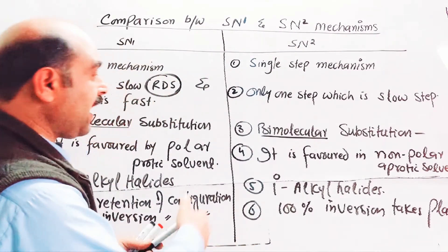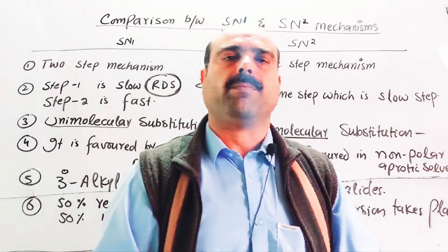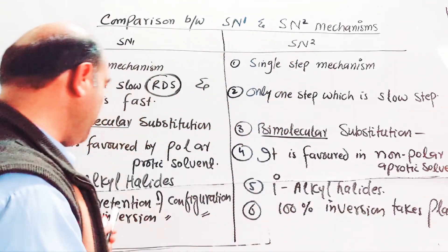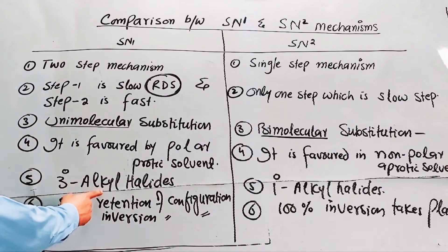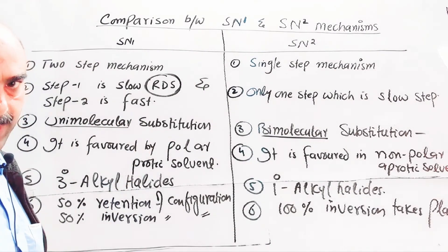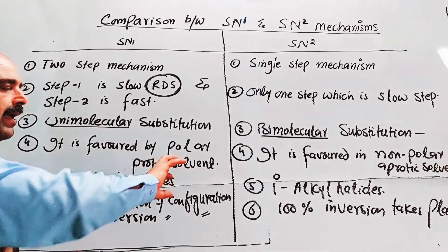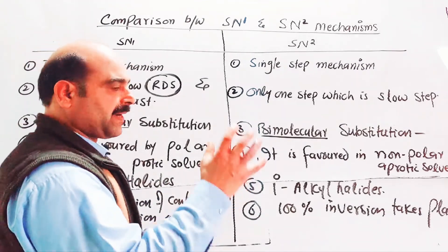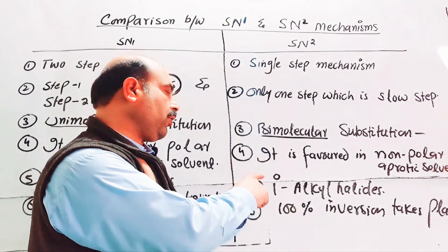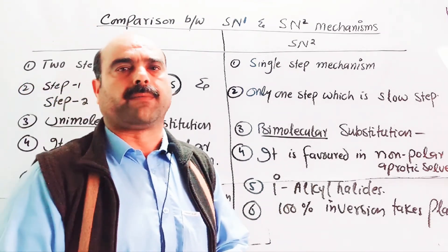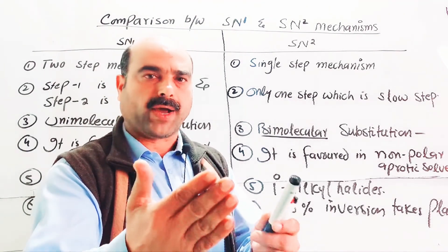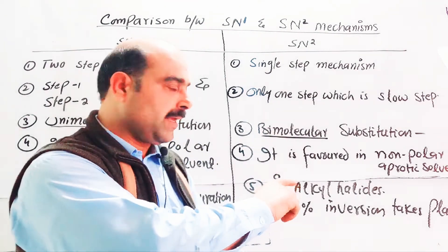To clarify the inversion: in SN1, the nucleophile can attack from the front side, retaining the configuration, or from the back side, causing inversion — giving 50% retention and 50% inversion. In SN2, the nucleophile always attacks from the back side because the front side is blocked by the halogen atom (partial negative), so 100% inversion occurs.